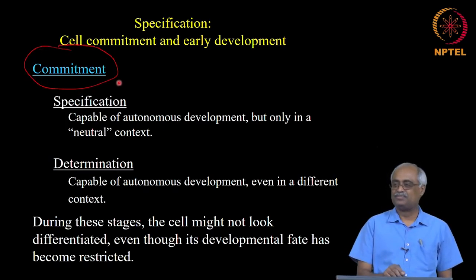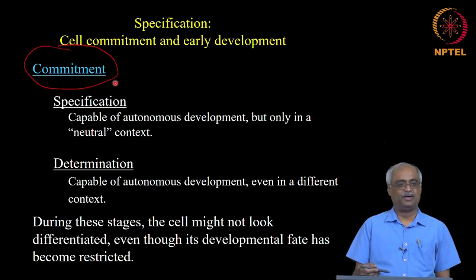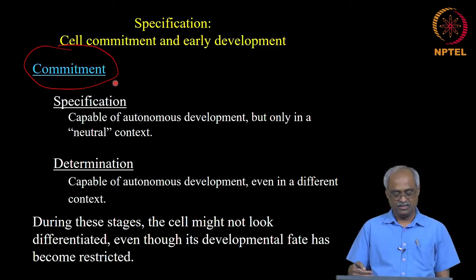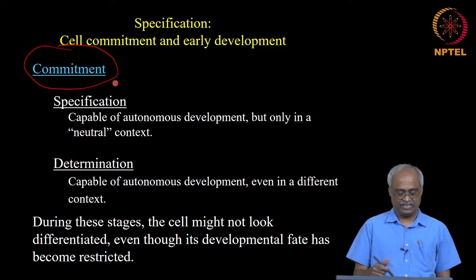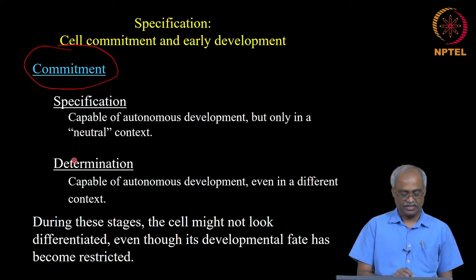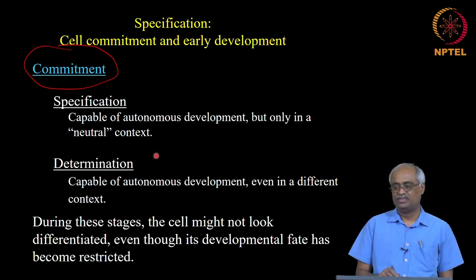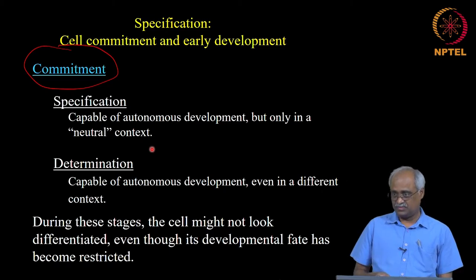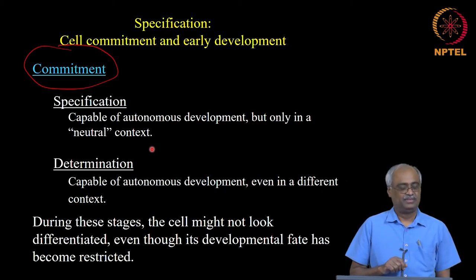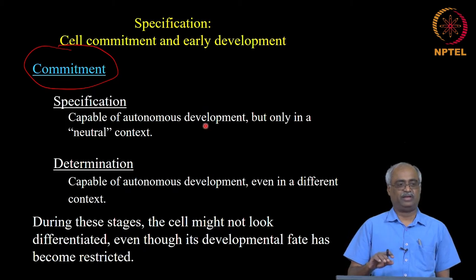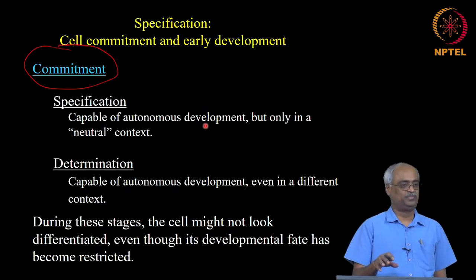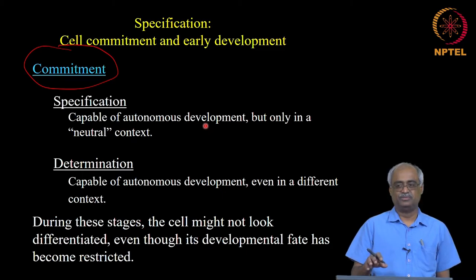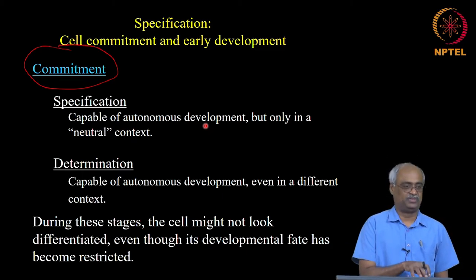Commitment itself has different stages — a progressive set of situations. Two easily identifiable states are specification and determination, with differentiation being the end result. Specification is when the cell has been induced and knows what it wants to do, and it is ready to do so as long as no one gives an opposite signal.